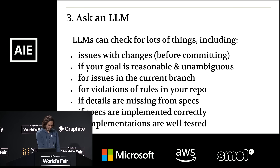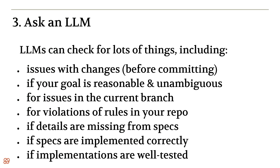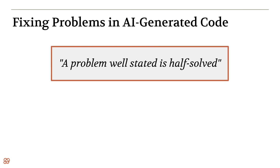The third detection method is to ask an LLM. There are many things you can check for: issues before you commit, whether what you're trying to do even makes sense, issues in the current branch, violations of your style guide or architecture documents, details missing from specs, specs that aren't implemented, insufficient test coverage, or whatever other custom checks you want. One of the things we're enabling in Sculptor is for people to extend the checks so they can add their own best practices into the codebase and make sure they're continually verified.